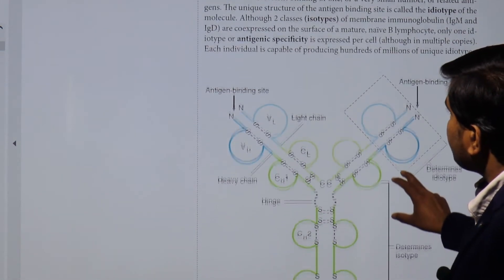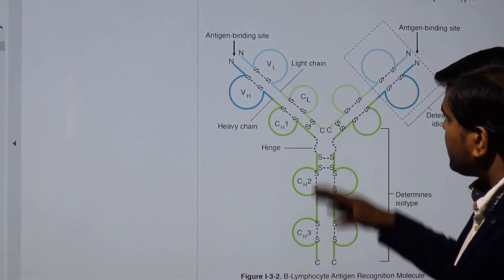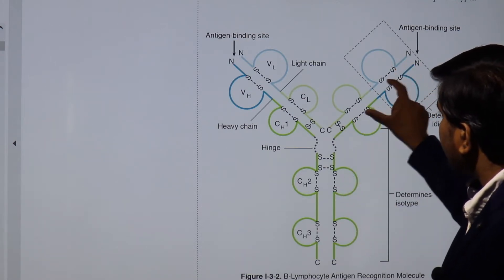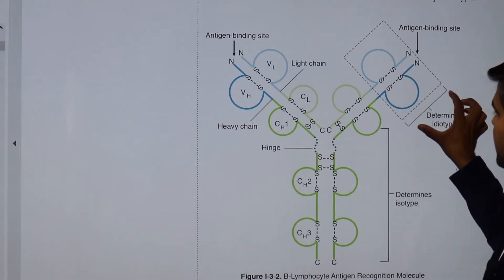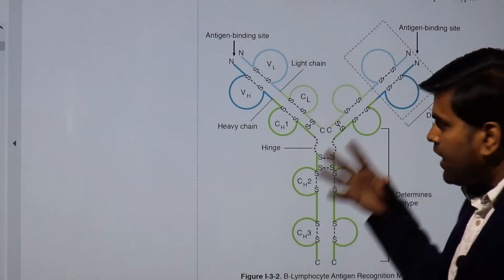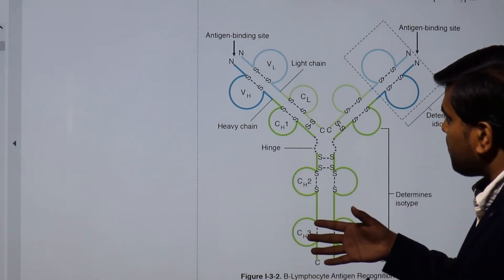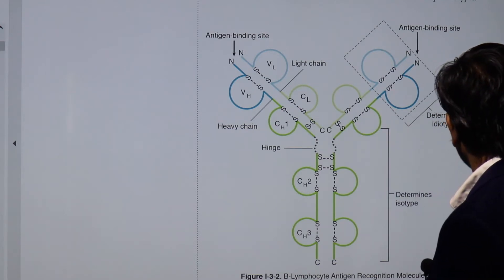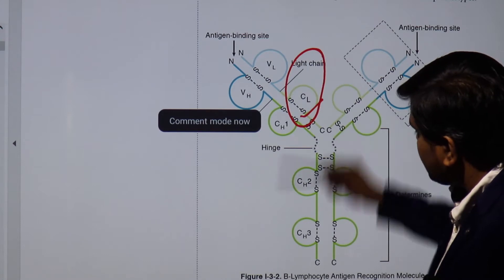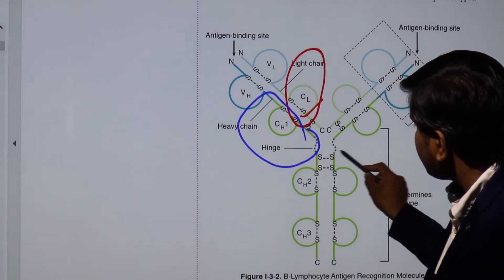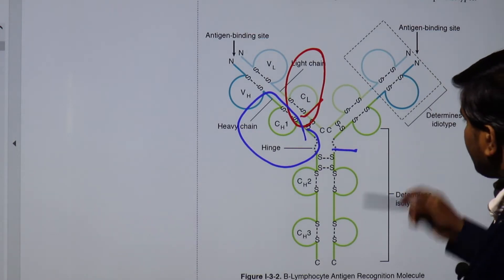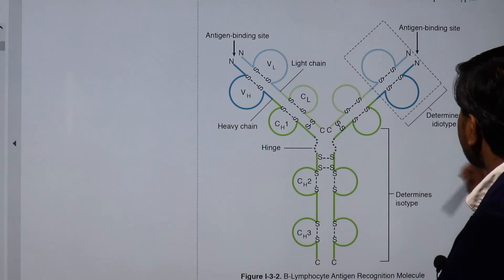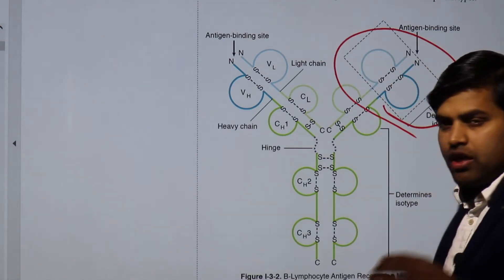Consider the Y-shaped antibody: it has the Fc portion (fragment crystalline) at the bottom and the Fab portion (fragment antigen binding) at the top. The antigen-binding site is called the idiotype — the place where the antigen attaches. There are millions of idiotype combinations, produced through VDJ recombination. The antibody also has a hinge region, a light chain above, and a heavy chain below.